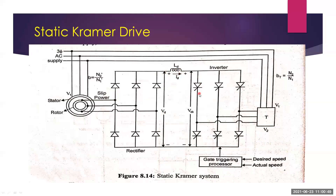The rectified DC voltage is fed to the inductor, which suppresses ripples and harmonics, producing a smooth output that is fed to the inverter input. The DC power is converted into AC power by using a line-commutated inverter. Both the rectifier and inverter are commutated by alternating EMFs appearing in the slip rings and supply bus bars respectively.